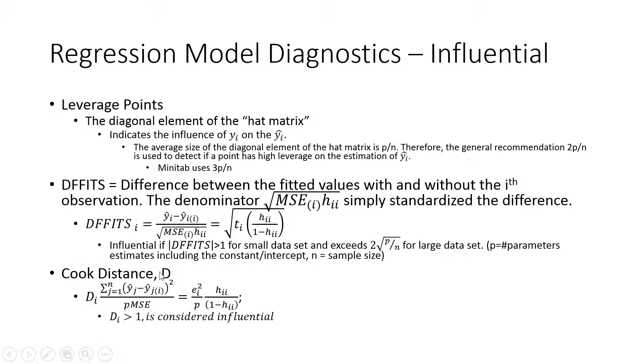Cook distance also comes from any statistical software. It should be Di equals, there is a typo here. Let me fix that. So it should be like this. If you look at the cook distance, basically the overall impact. You see that summation sign was added right before this. So it's basically looking at the overall impact of the deleted point on the model, similar to DFFITS. If it exceeds more than one, then we consider the point is influential.